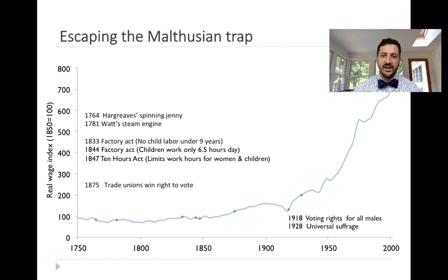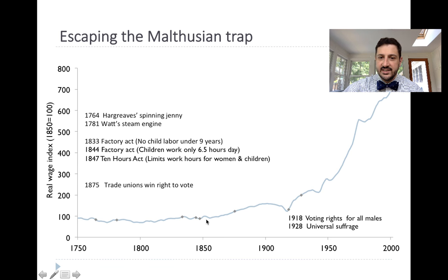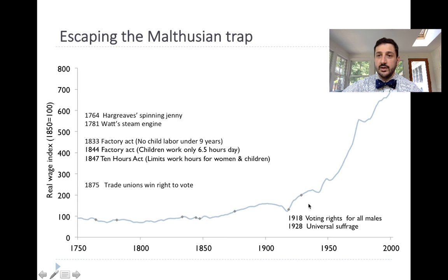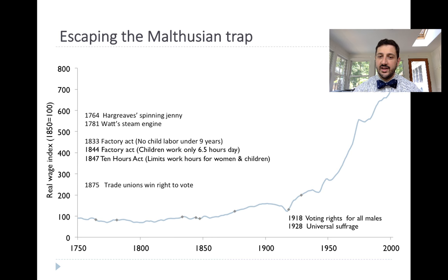That allowed workers to finally start capturing some of the additional benefit of production. Wages were flat from 1750 to 1850, then slowly started to go up, and finally in the 20th century they really took off. Part of that had to do with universal voting for males in 1918 and then for everybody in 1928 — this is the UK we're talking about, not the US. Wages in the 20th century really exploded, and that's what we see in Western Europe and the United States, and what we're seeing right now in places like India and China, which are starting on that explosive hockey stick path.